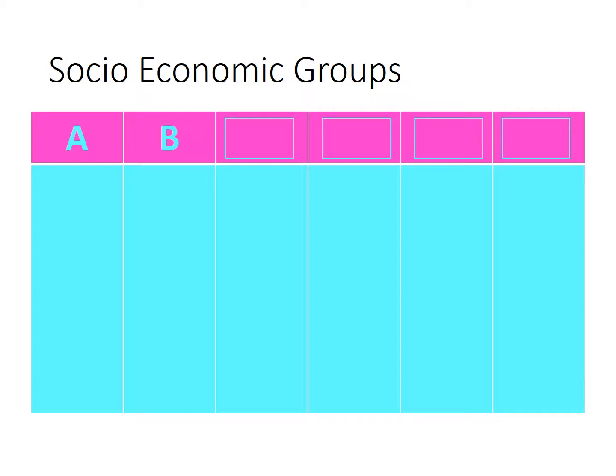The next category is B, which is managerial. Not as high as category A, but still well educated and fairly well off.